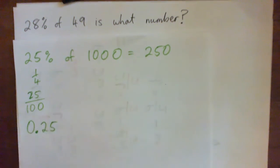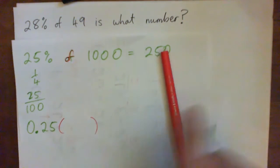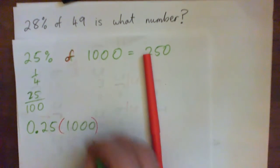So of 1,000, of actually means multiplied, you know that? All right, so of would be multiplied by 1,000, right?